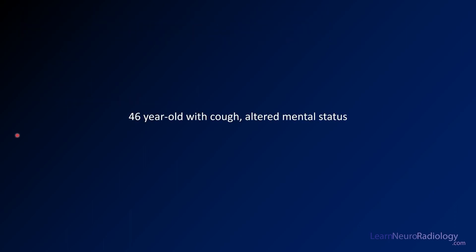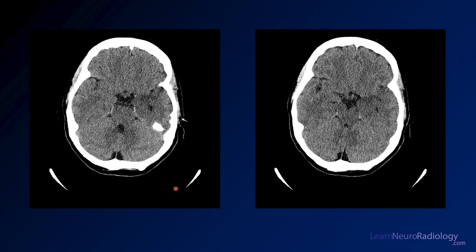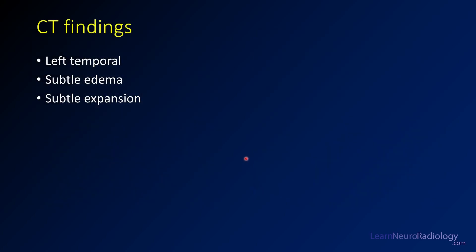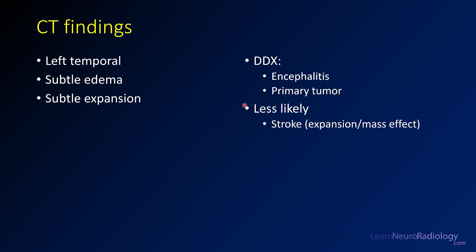Our case here: we have a 46-year-old with cough and altered mental status. Here we have some images from a CT. They don't look that abnormal, but if you look at the left anterior temporal lobe, maybe it's a little bit hypodense, maybe it's a little bit swollen. You might see a little medialization of the uncus there. On the adjacent CT slice, there's a little bit of swelling of the medial left temporal lobe, a little bit of edema, a little bit of subtle expansion. When you see that, your primary differential is going to be encephalitis or a primary tumor.